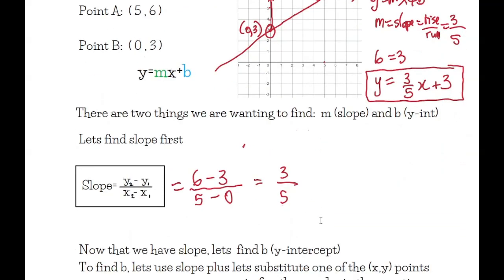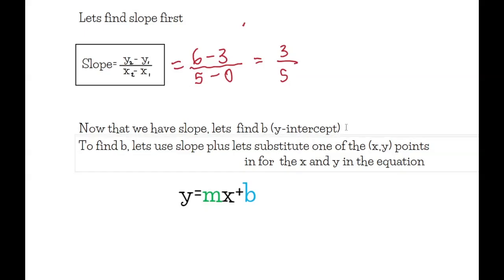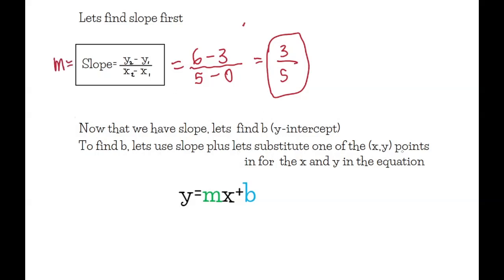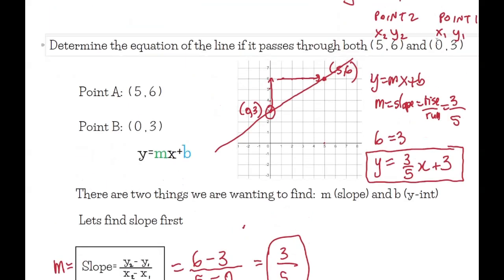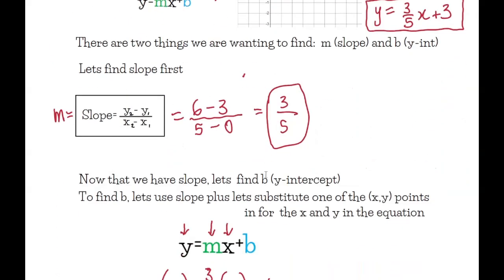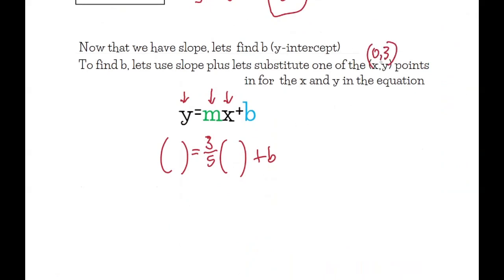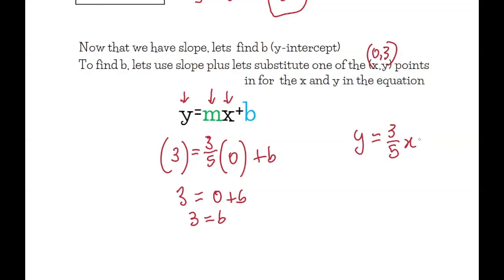Now that we have the slope, let's find b, the y-intercept. We substitute one of the x and y points into y equals mx plus b. I'll use the point (0, 3) since those are smaller numbers. So y is 3, m is three-fifths, and x is 0. We get 3 equals three-fifths times 0 plus b, which is 3 equals 0 plus b, so b equals 3. The equation of the line is y equals three-fifths x plus 3.